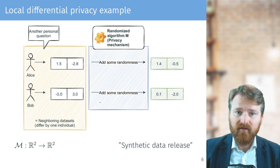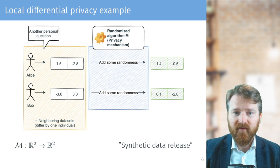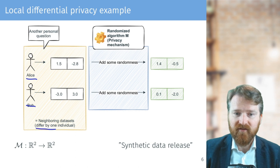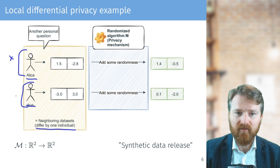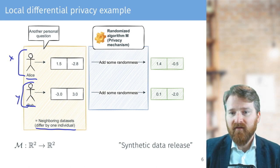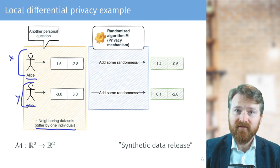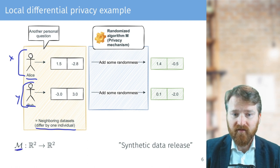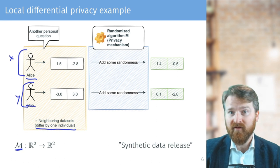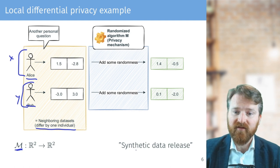So in our example, just explaining the definition, we have Alice and Bob, and for us these are two neighboring datasets because they differ by one individual. So this would be X and Y, and this is our randomized algorithm or privacy mechanism. And the function of this mechanism is basically from two-dimensional vector into another two-dimensional vector, so we call this mechanism also synthetic data release.